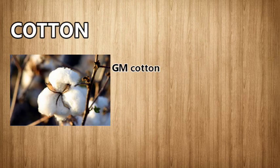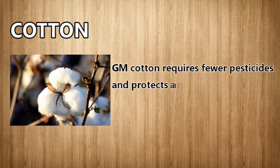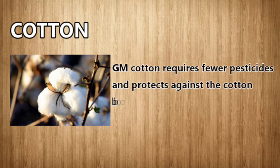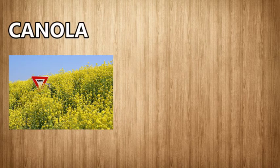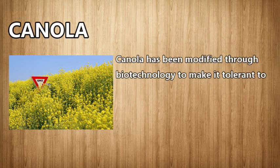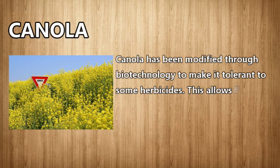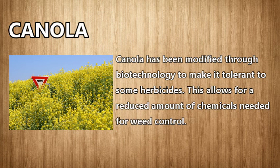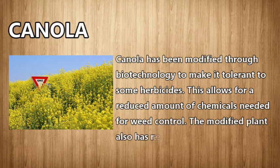Cotton: GM cotton requires fewer pesticides and protects against the cotton bollworm. Canola: canola has been modified through biotechnology to make it tolerant to some herbicides, allowing for a reduced amount of chemicals needed for weed control. The modified plant also has resistance to pests and fungus.